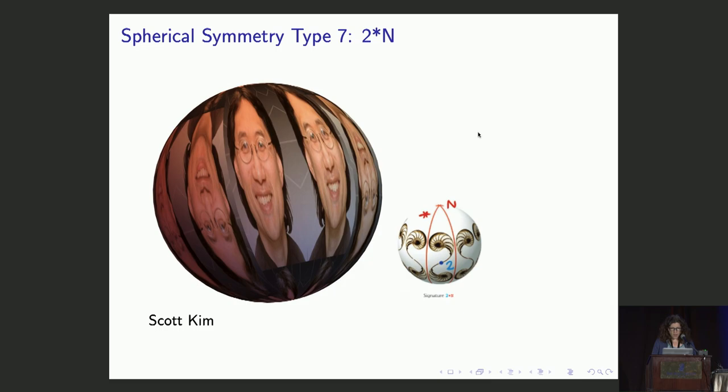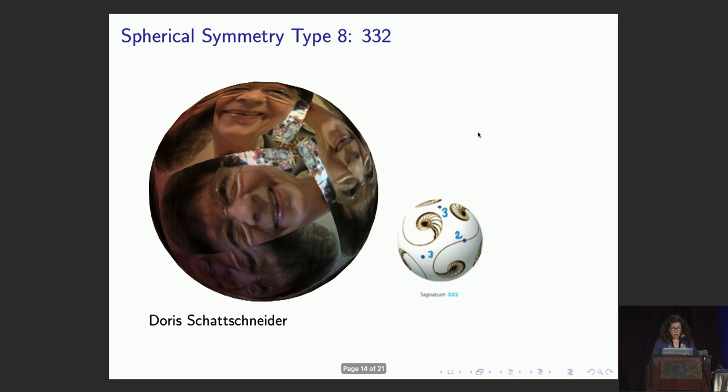And if we put a rotation at the equator, but mirrors crossing through at the poles, we get 2-star N symmetry, shown by Scott Kim. So those are the seven types of infinite families of spherical symmetry, but there are also some sporadic spherical symmetry types.